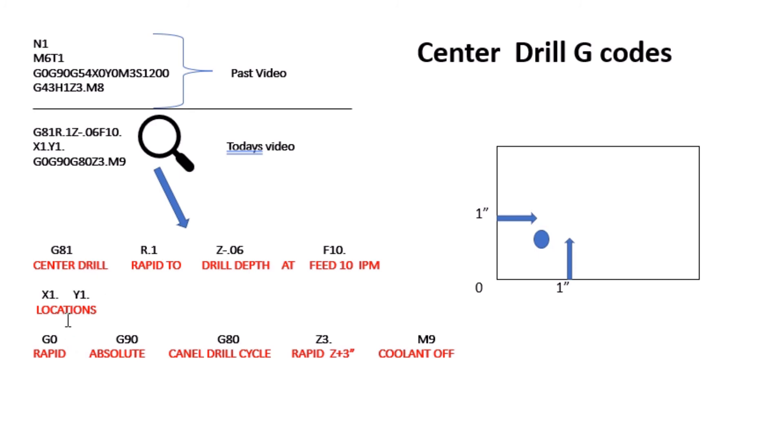Now if I wanted to put a fourth line in here, a G81 line—you got your X1 line—in a line between this one and the last one, and I just wanted to put an X2 point, only an X2 point, it will remain at Y1 point. It's called modal or non-modal G codes—they will always do that.